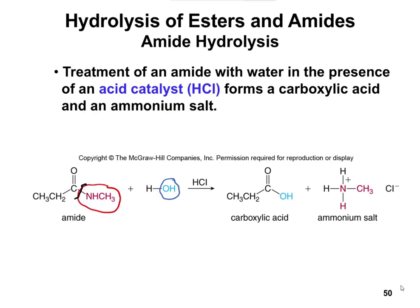In this case, the NHCH3 group is going to leave. In water, we write out the H and the OH, and those two groups are going to trade places. The NHCH3 is going to join with the H+, and the OH is going to come over to give us two products. One is going to be a carboxylic acid, where you have the C double bonded to O bonded to OH.